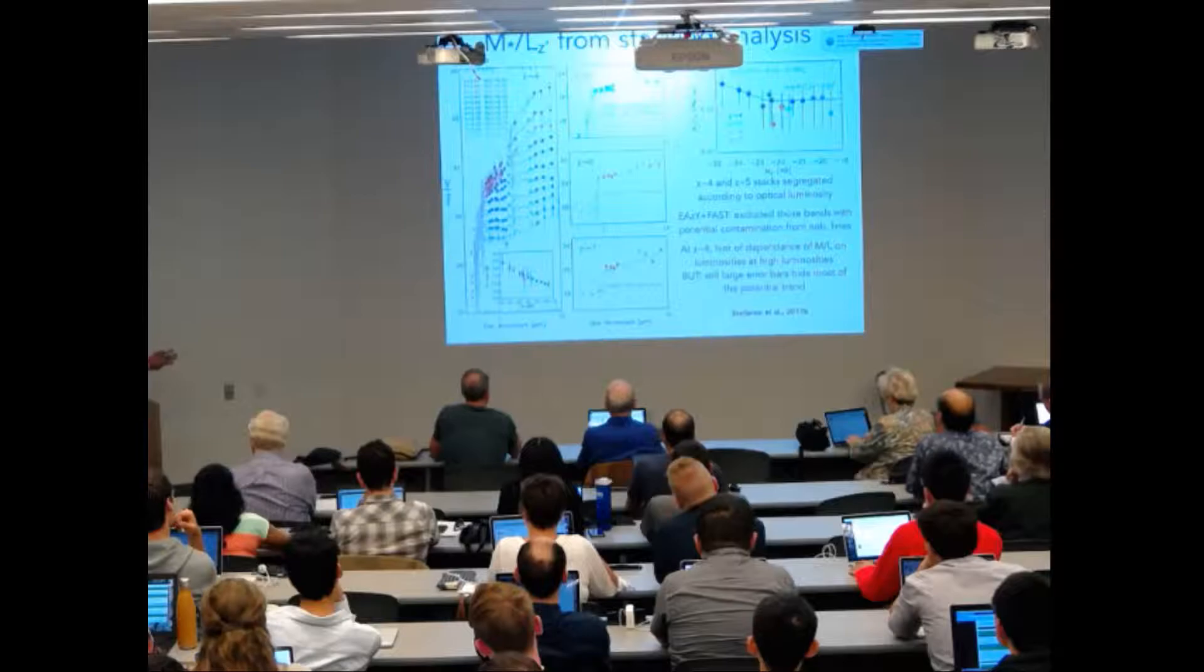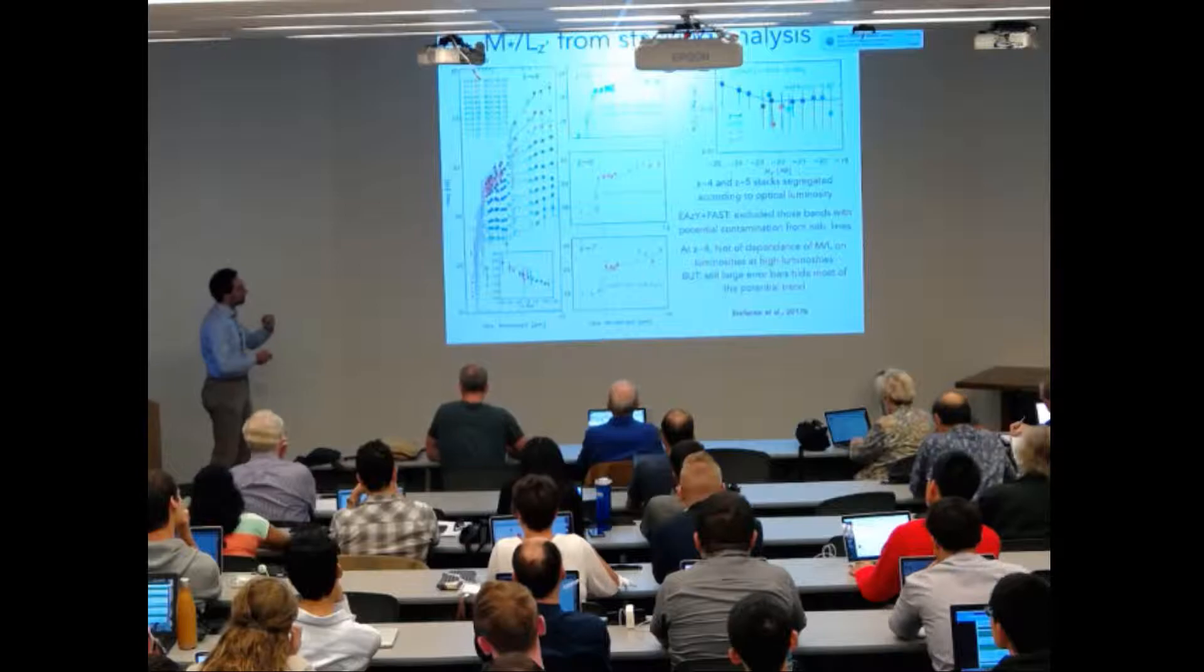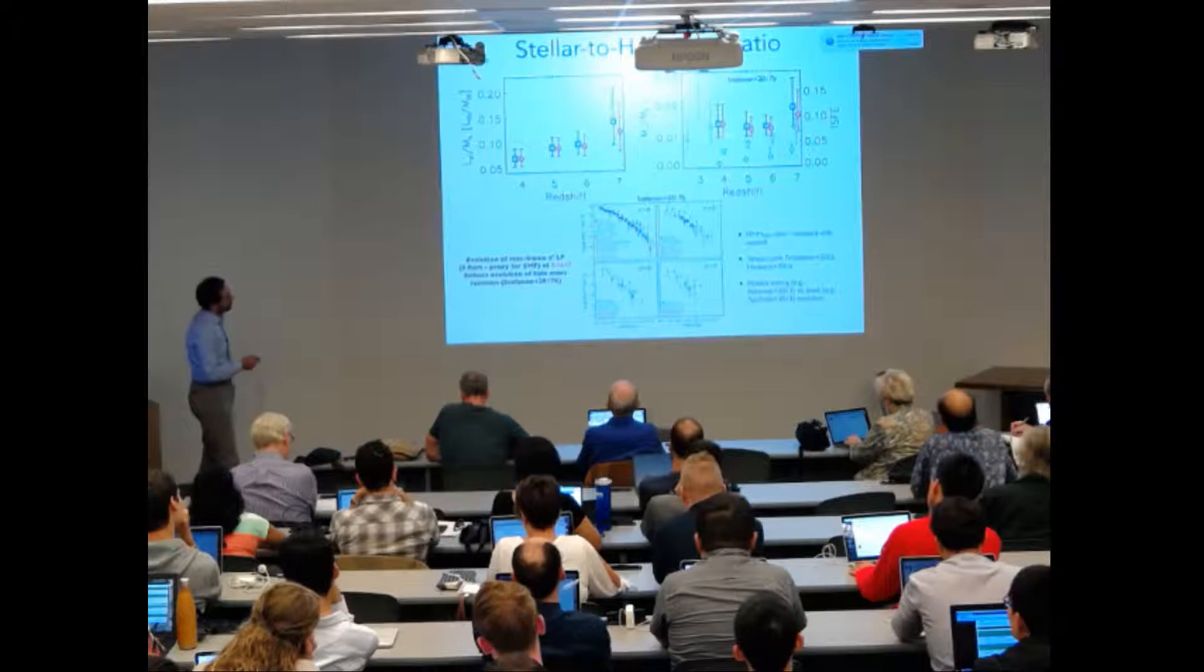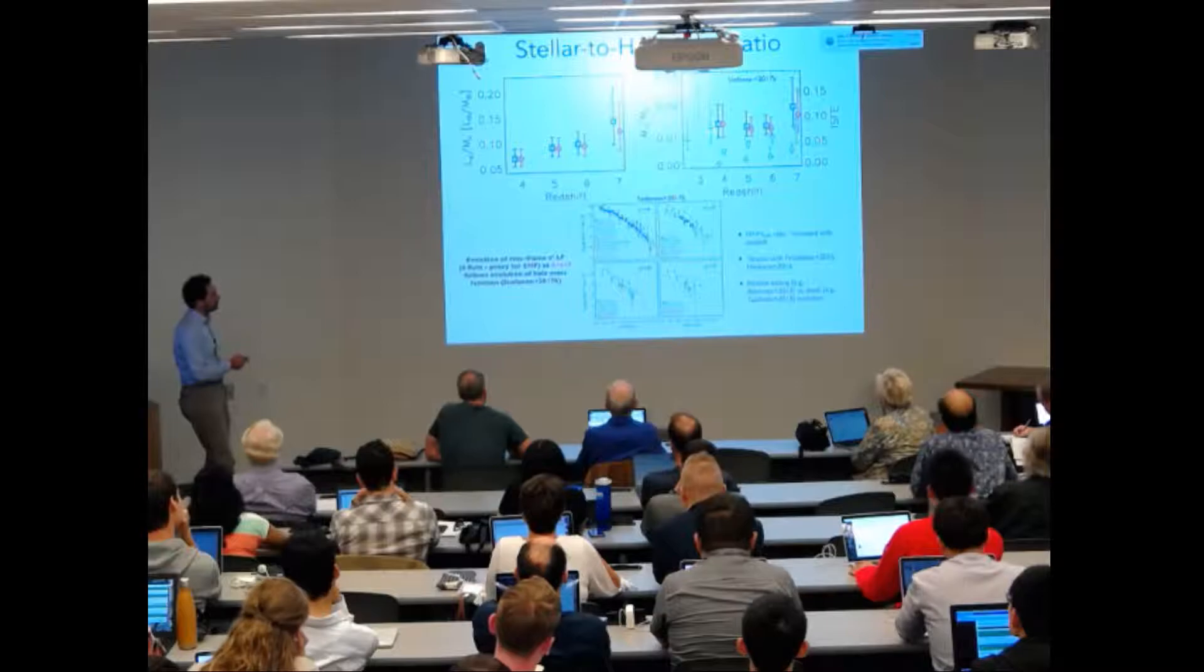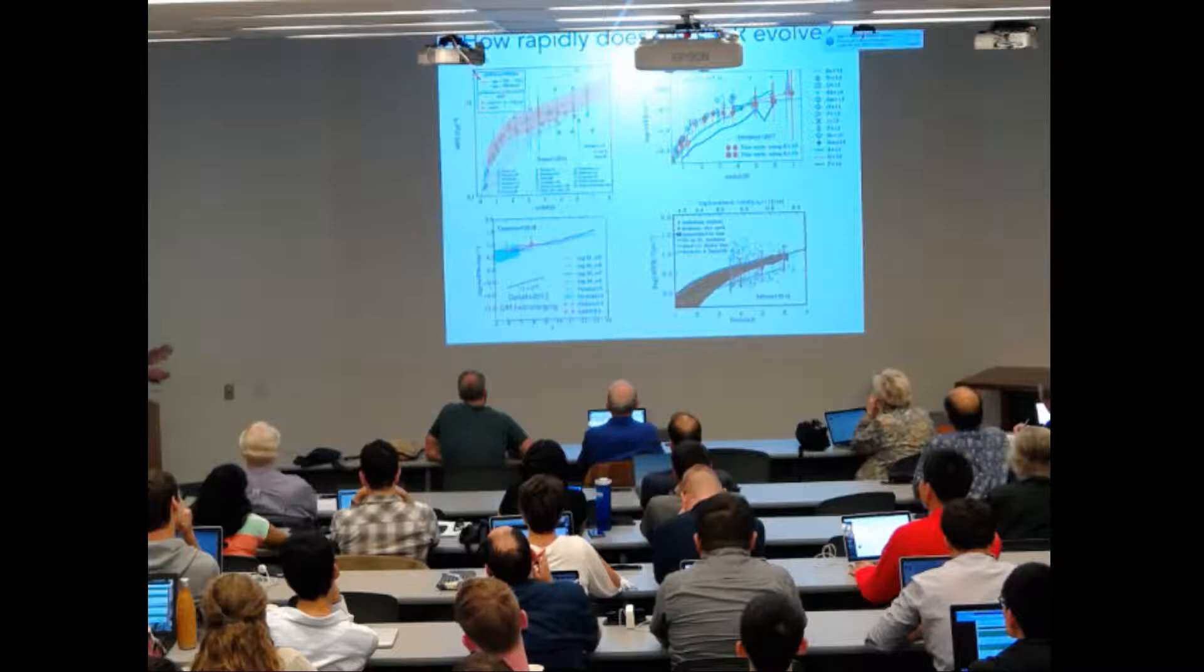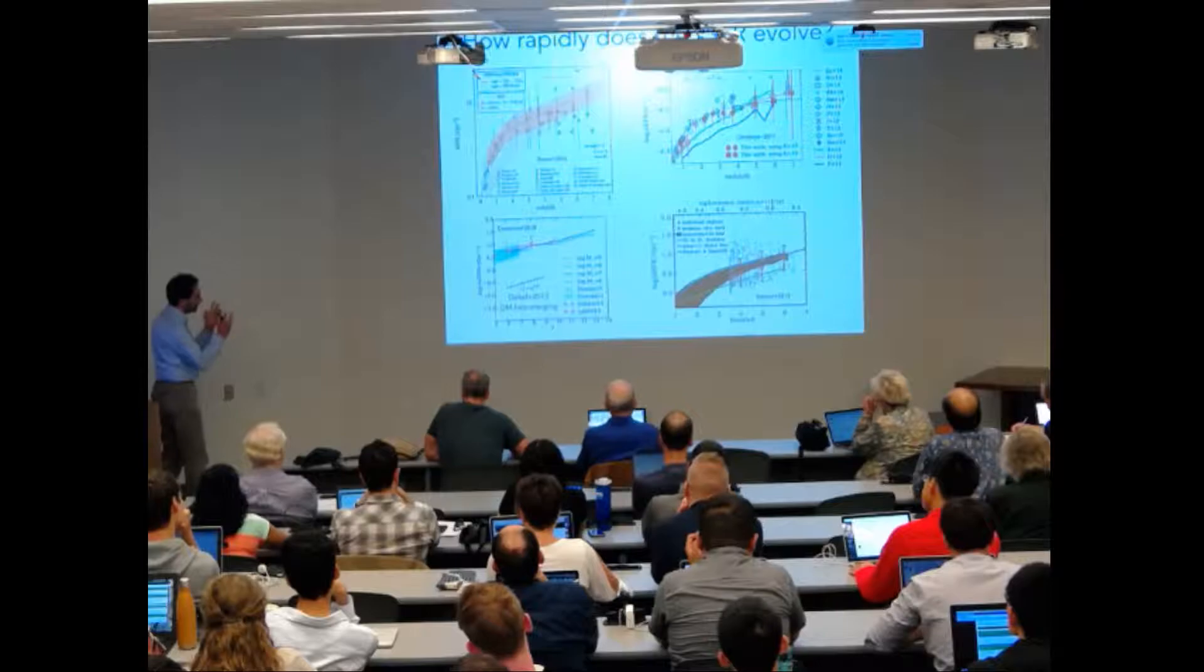We can find some more quantitative way of looking at this. We transform the rest frame optical light into stellar mass by stacking, and we obtain here the stellar-to-halo mass ratio over the redshift range four to seven. We see that this basically does not depend on redshift. The stellar-to-halo mass ratio represents some kind of integrated measurement of the efficiency of star formation, but we can also look at the evolution of the specific star formation rate.